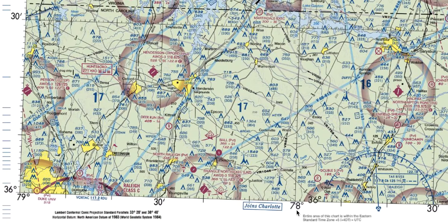78 degrees, 78 degrees 30 minutes, 79 degrees. The key here is to know that the grid boxes are 30 minutes by 30 minutes, and each tick mark represents one-minute increments.